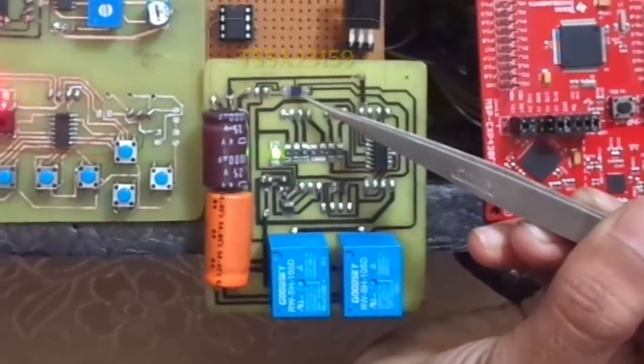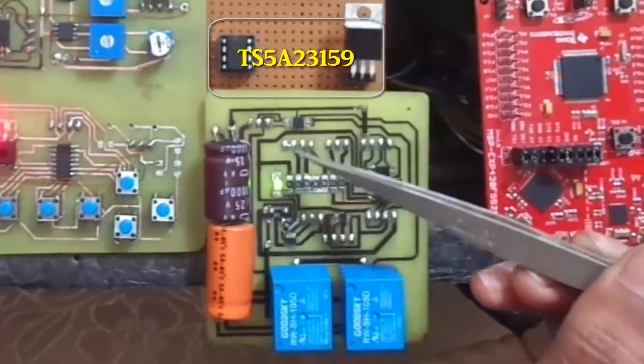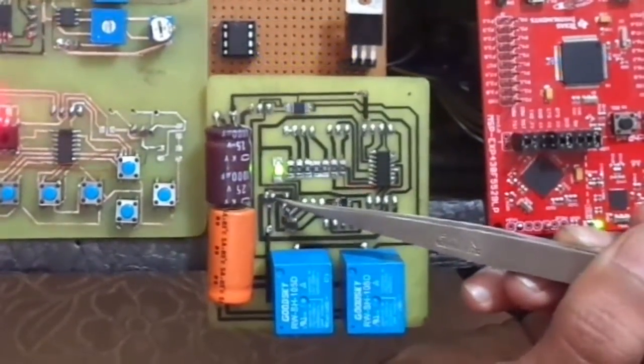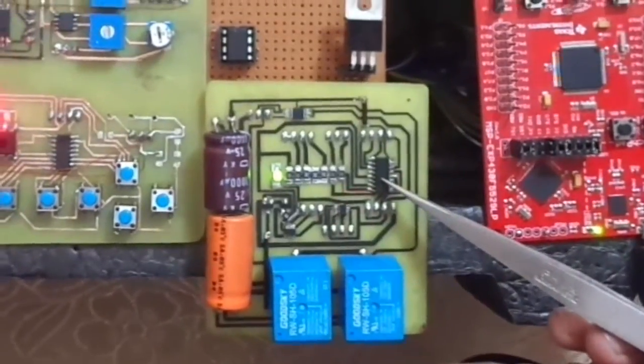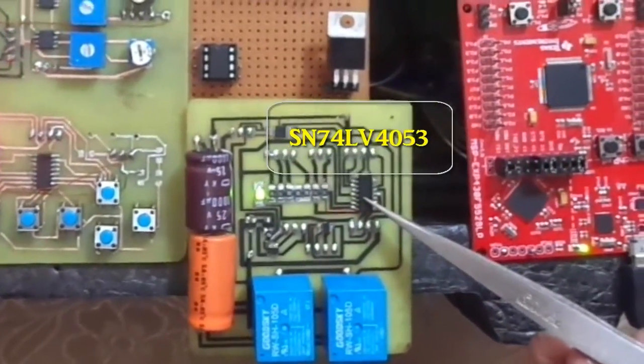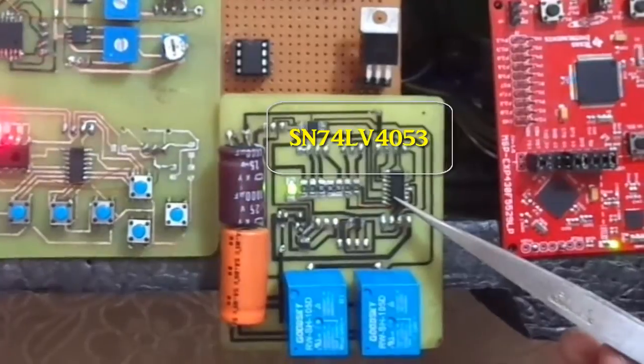analog SPDT switch TS5A23159, current sources, capacitors and relays. Texas Instruments SN74LVC4053 is used for transistor identification.